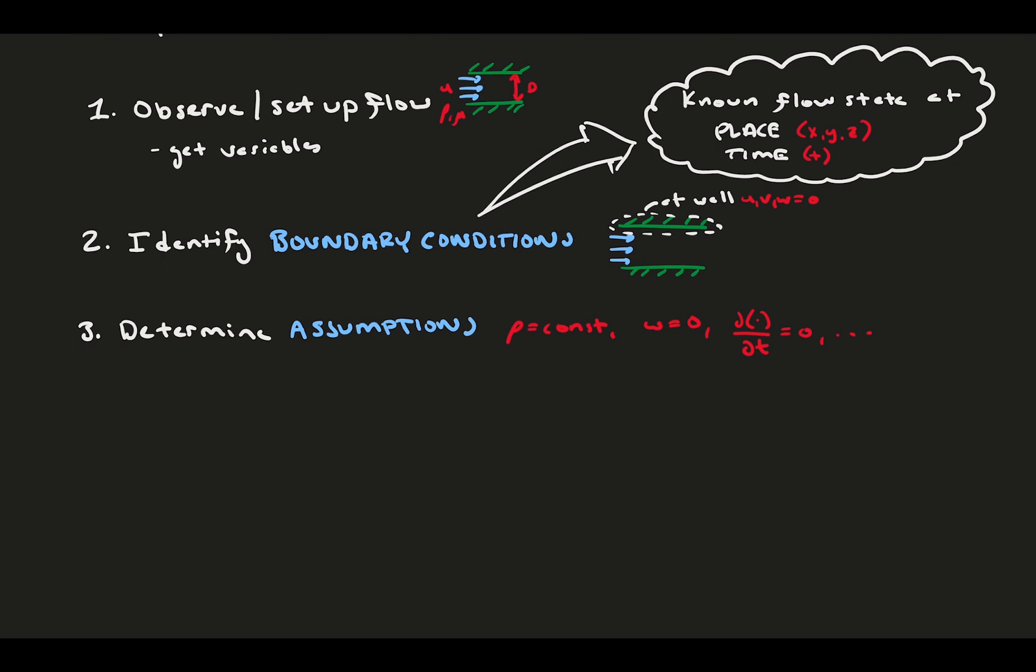Is your flow a liquid? Boom, incompressible. Can you watch it for a long period of time and not see any changes? Well, it's probably steady. These assumptions are critical in simplifying our conservation equations, which is step four. We use the assumptions to pare down the conservation equations into something more solvable. With step five, we start with the conservation of mass because it's generally the most simple. Here, more often than not, we use this to get some condition on one of the velocities that we can bring with us to the next step.